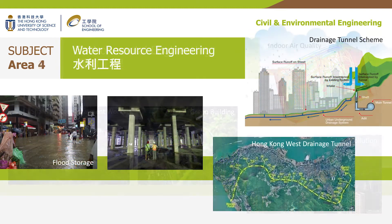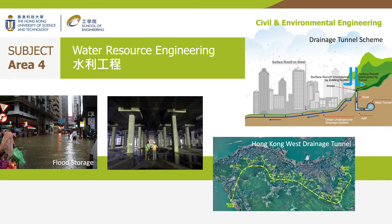The fourth area is water resource engineering. In 2018, we had Typhoon Signal No. 8, which seriously flooded Macau but not Hong Kong. It is actually the achievement of civil engineers who work to avoid flooding, plan the drainage system, manage catchment of rainwater, and oversee construction and maintenance of reservoirs.